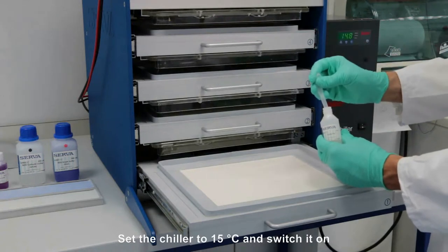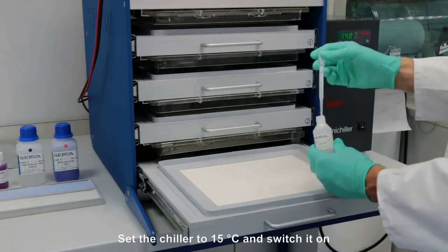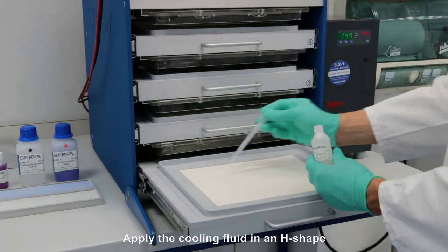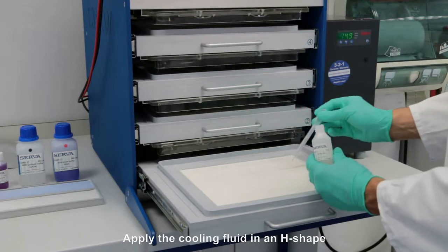Set the chiller to 15 degrees Celsius and turn it on. Apply the cooling fluid on the cooling plate in an H shape.